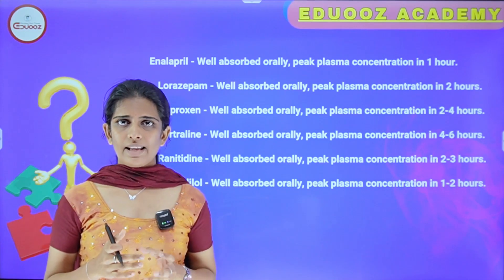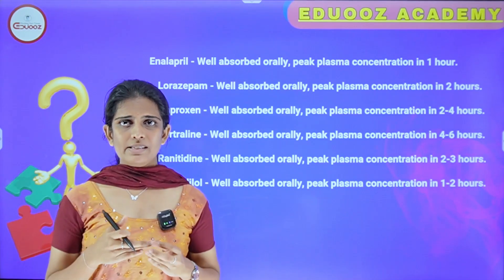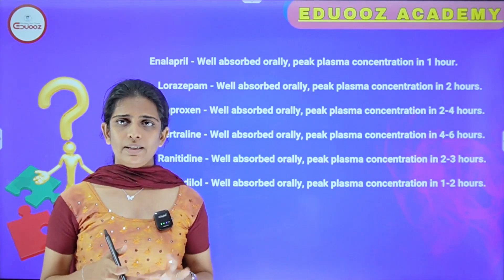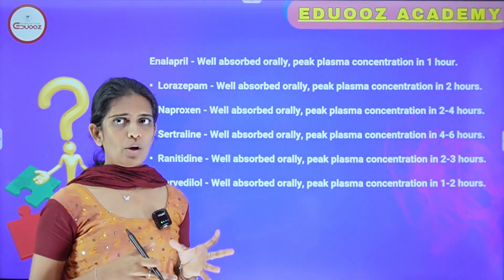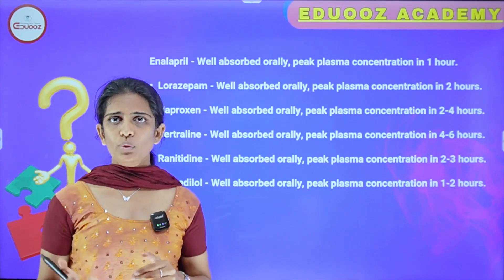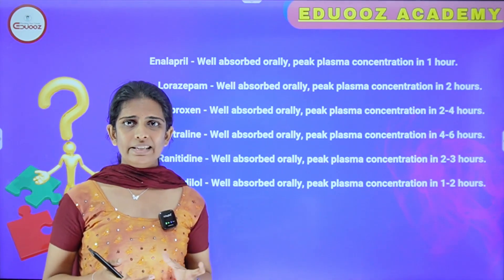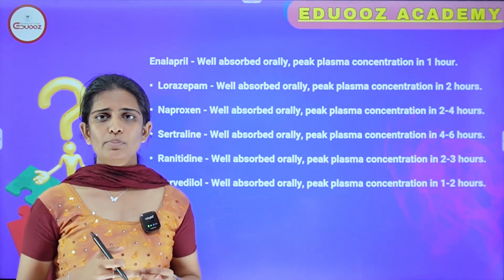Sertraline, an antidepressant drug, is well absorbed orally with peak plasma concentration in 4 to 6 hours. Ranitidine is used for gastrointestinal disorders such as gastroesophageal reflux and peptic ulcers.